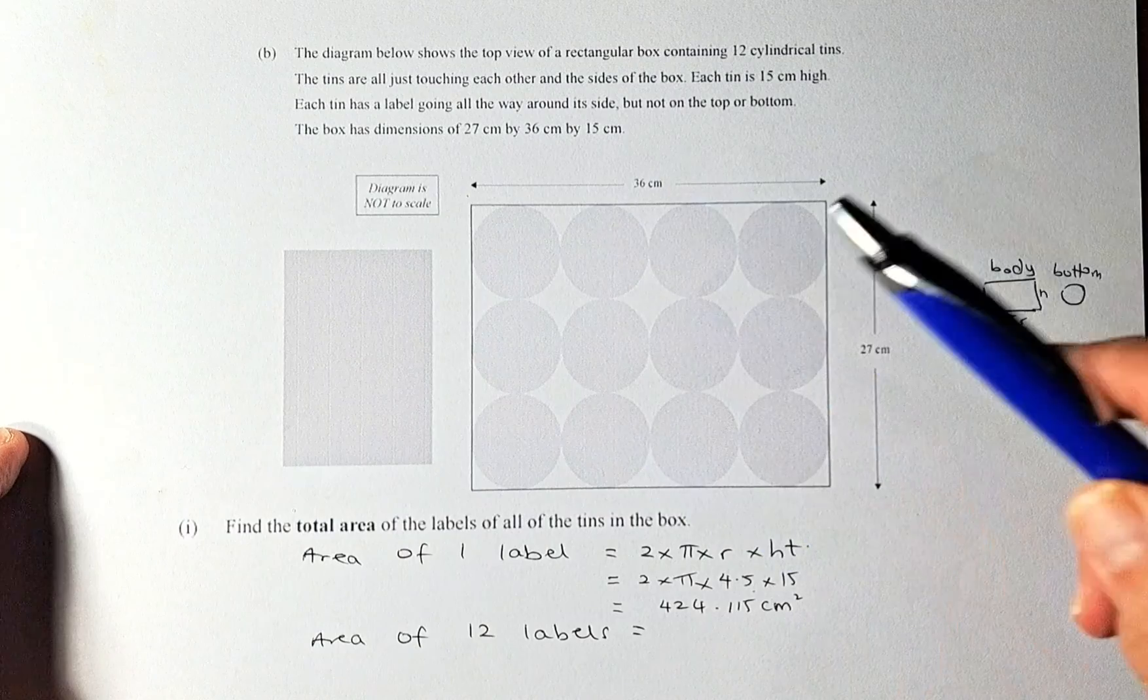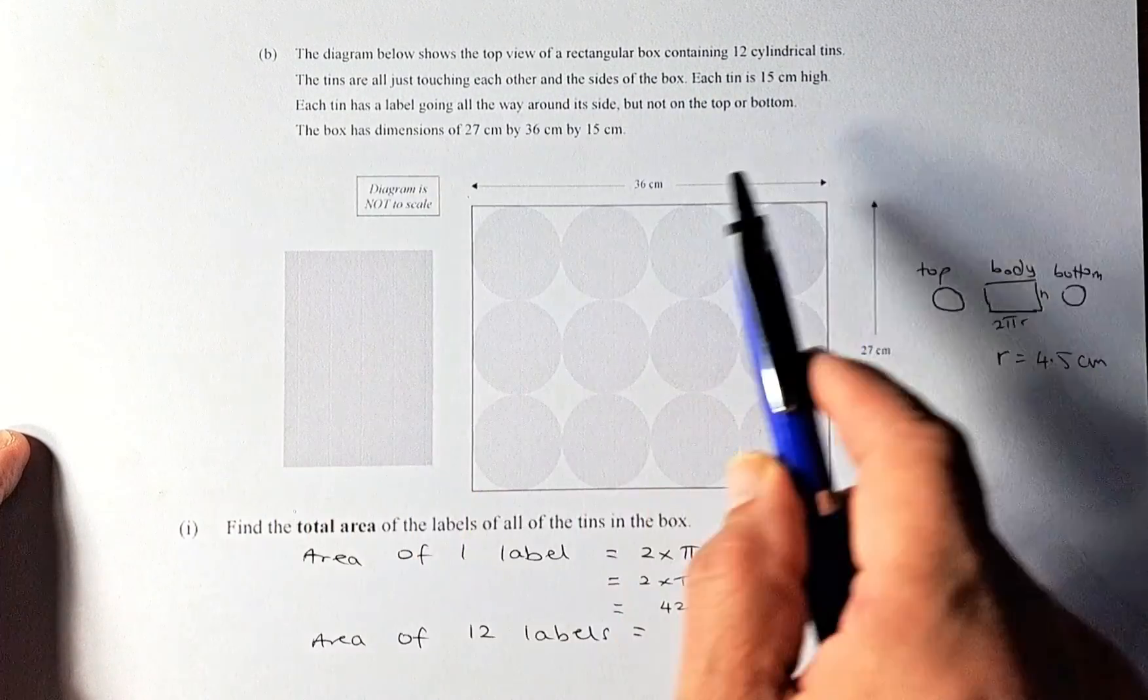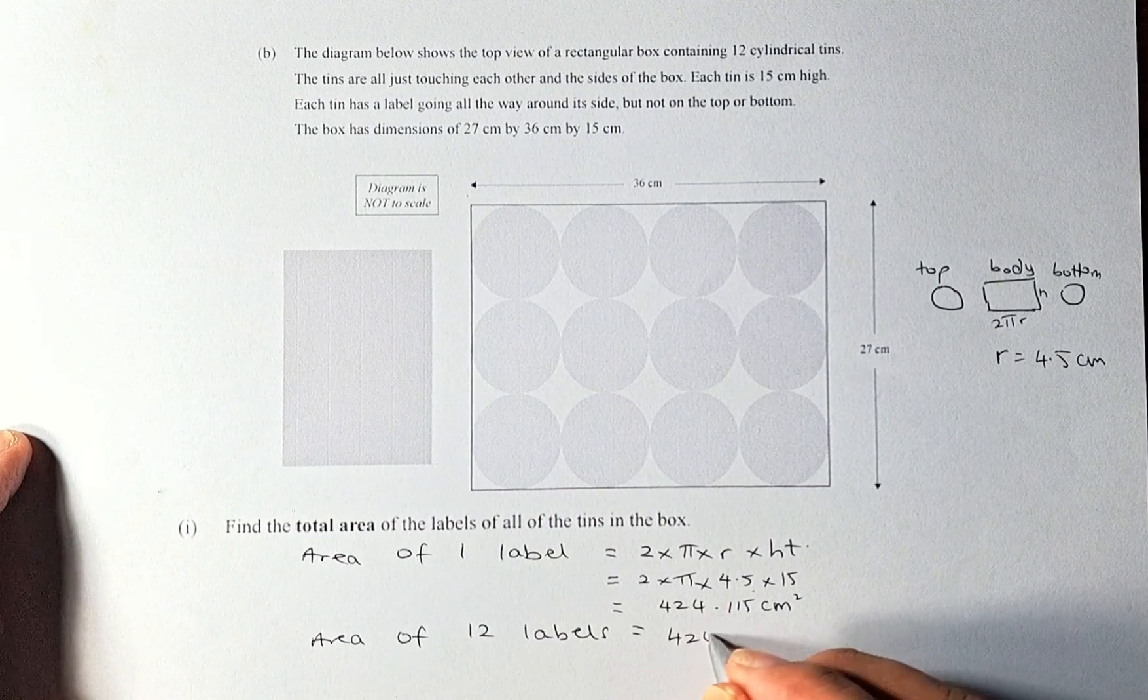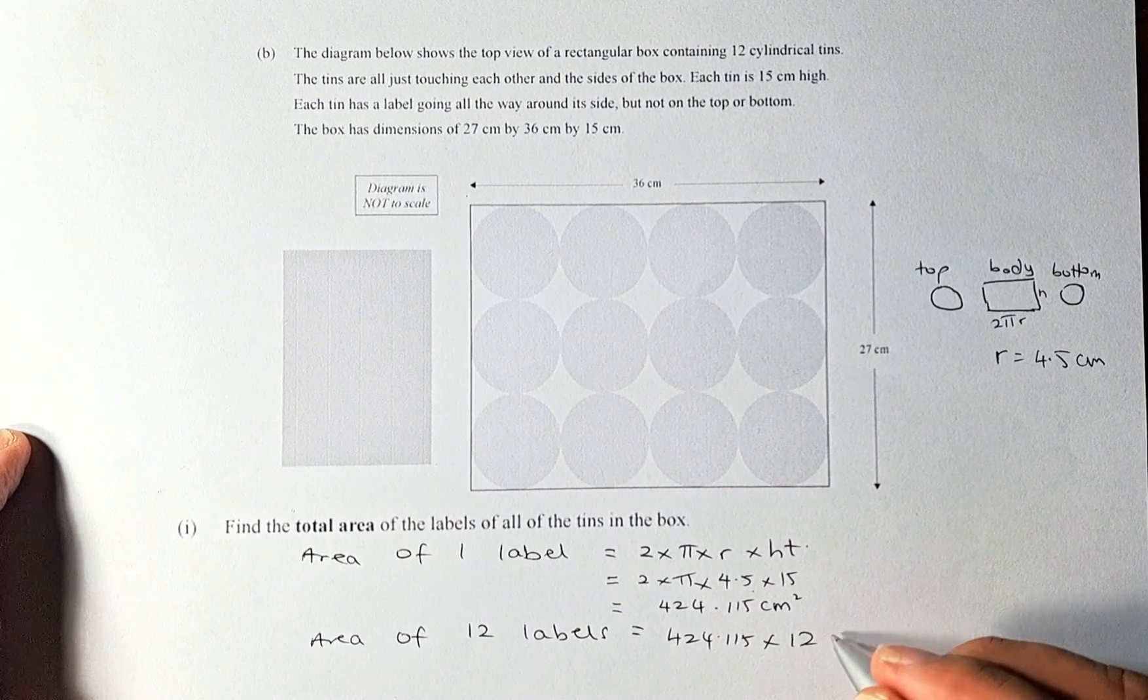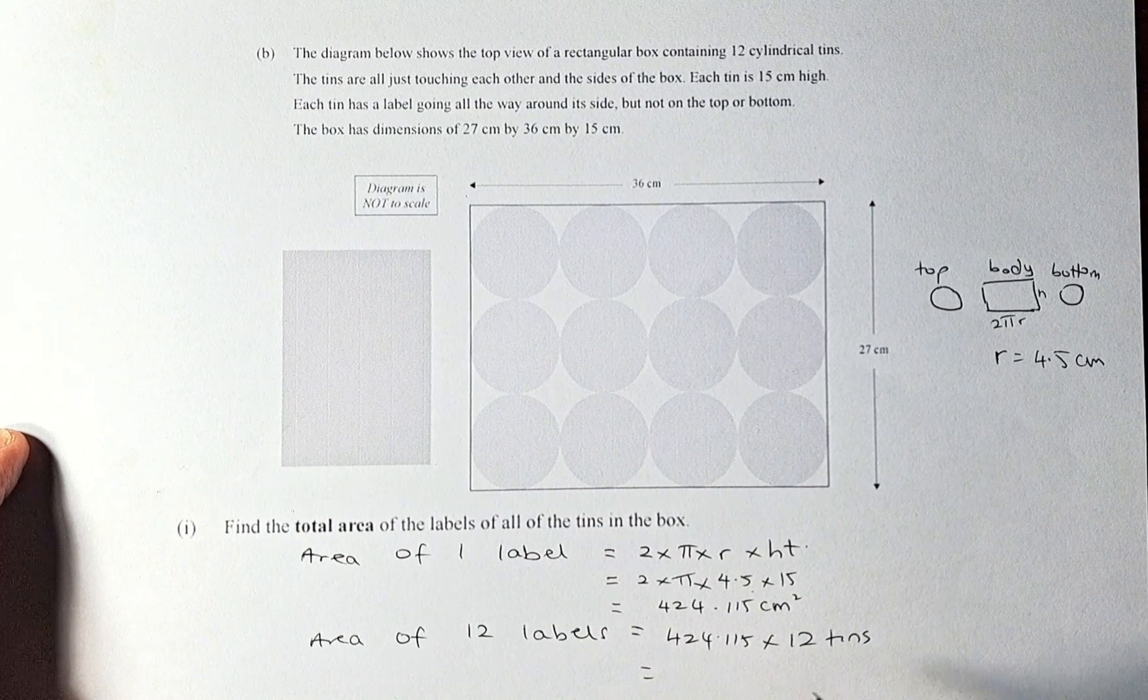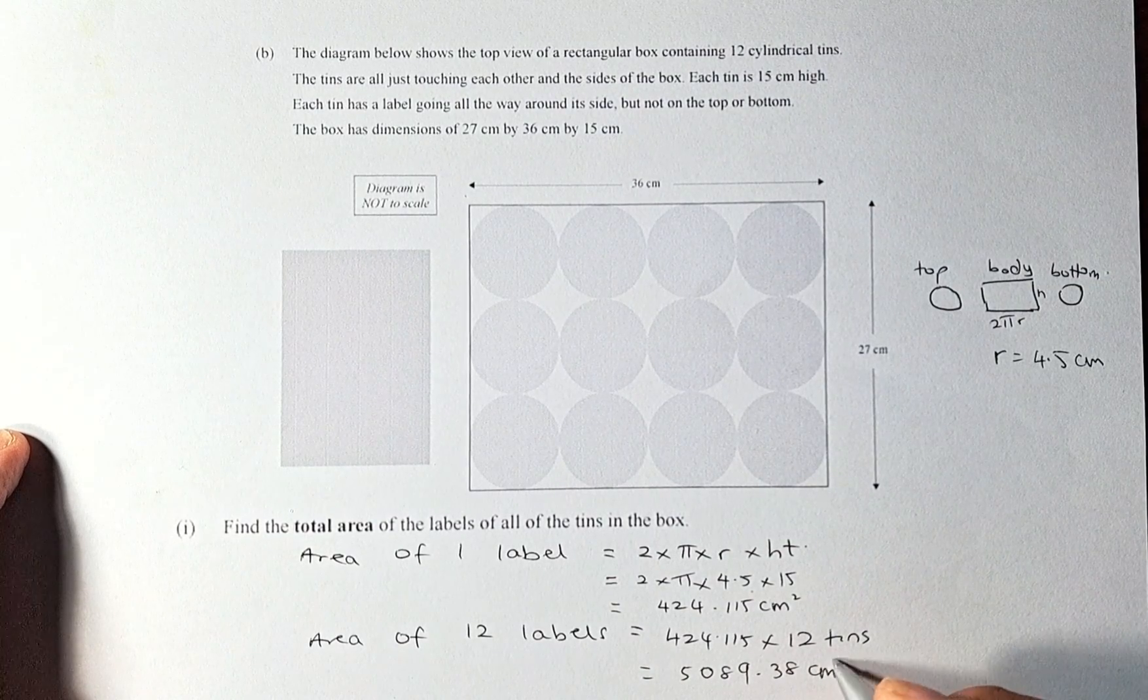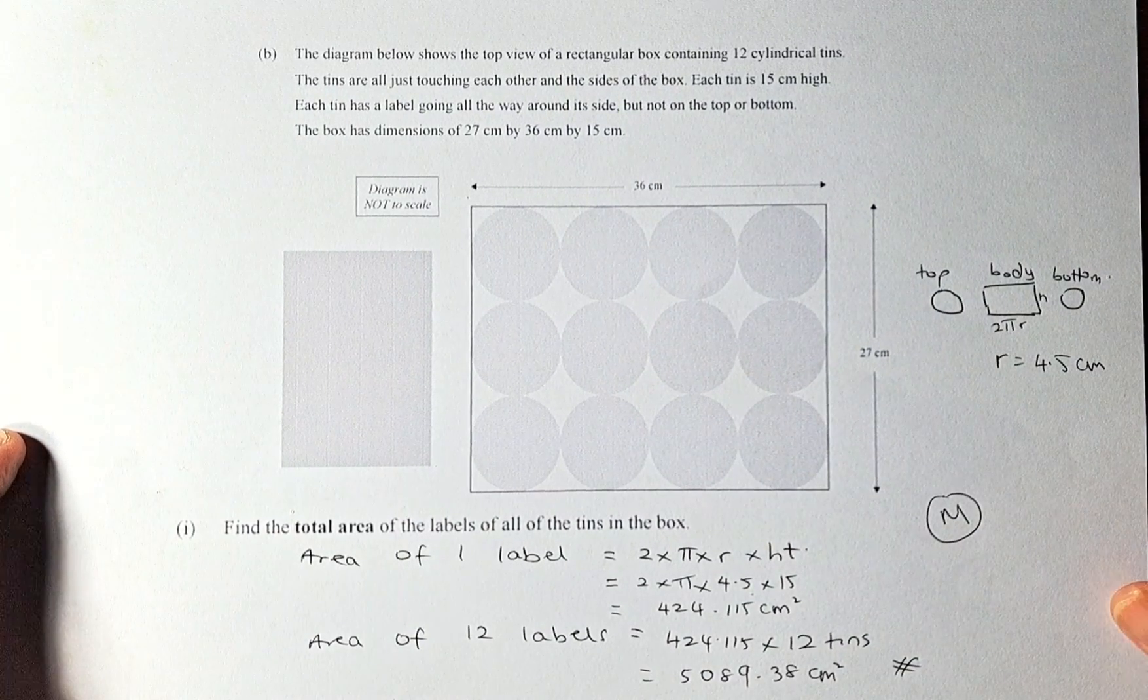The question asks you what is the area for the 12 cylindricals. So we are going to find the total area of all the tins in the box by taking that number, 424.115, and multiplying by 12 because there are 12 tins. Put it in your calculator again and you will get the answer of 5089.38 centimeters squared. So that answer will give you a merit in this paper.